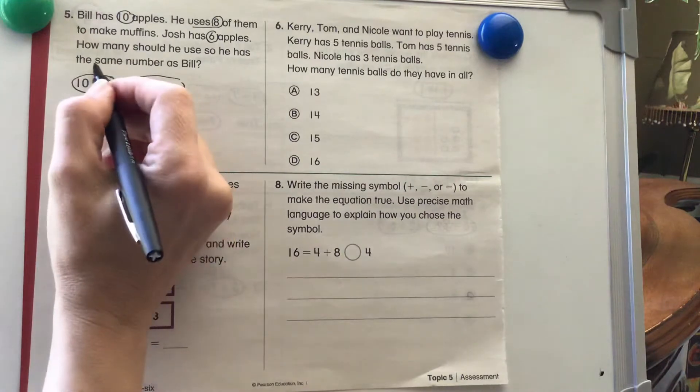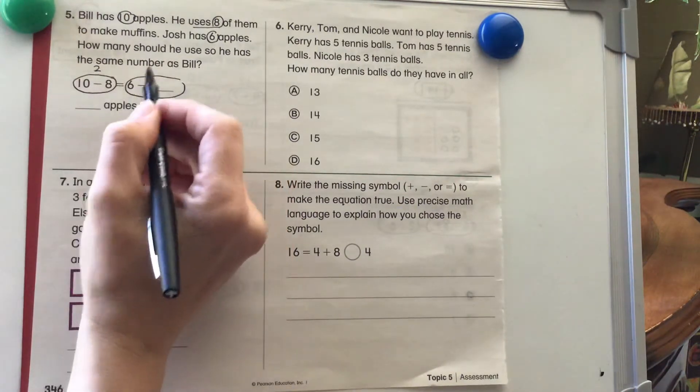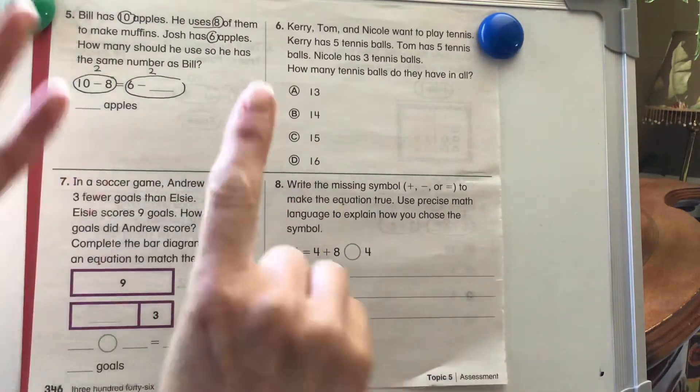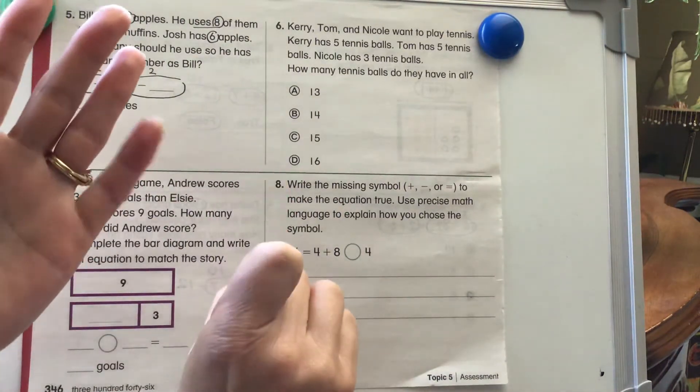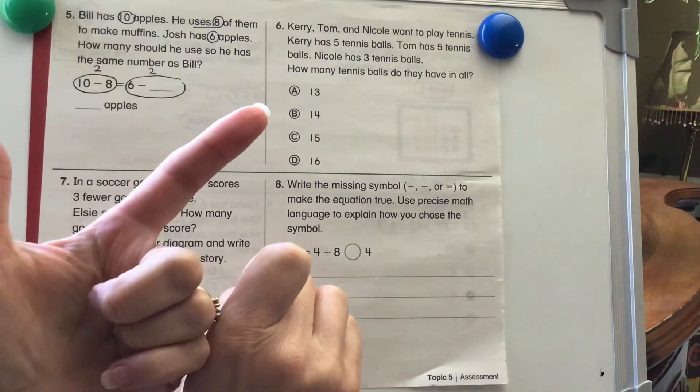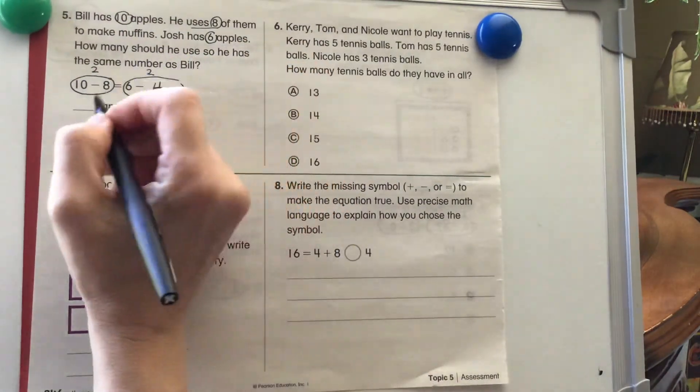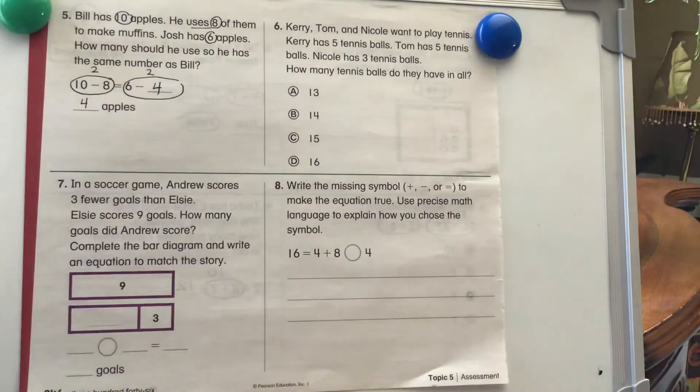I know that 10 minus 8 is 2 and I also need this to equal 2. So 6 minus something equals 2. I can put up 6 fingers, try to get down to 2: 1, 2, 3, 4. There we go. 6 minus 4 equals 2. So I know that he should use 4 apples for it to be the same amount.